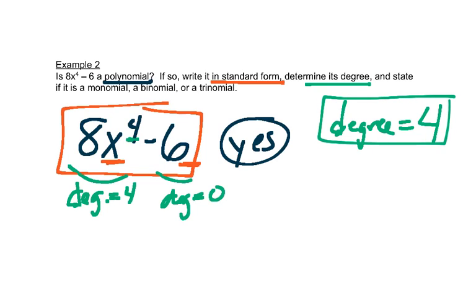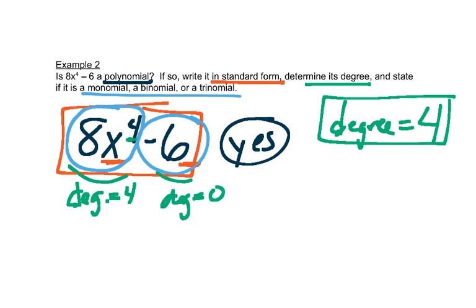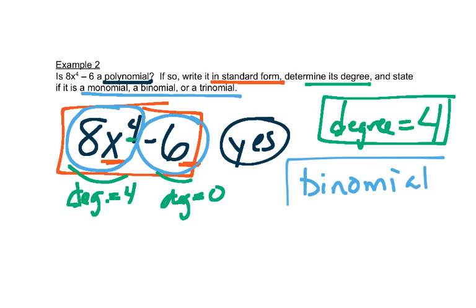By the way, this problem has two terms — there's an 8x to the 4th and there's a minus 6. That's two terms. So this polynomial more specifically is called a binomial.